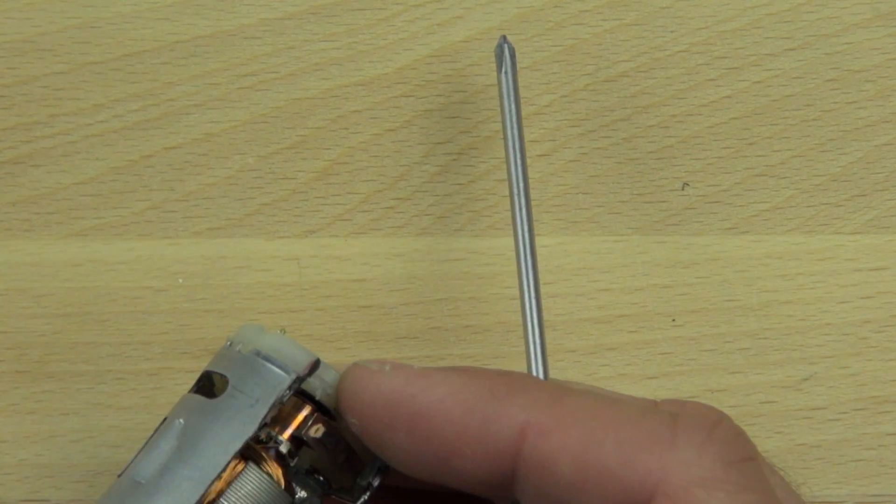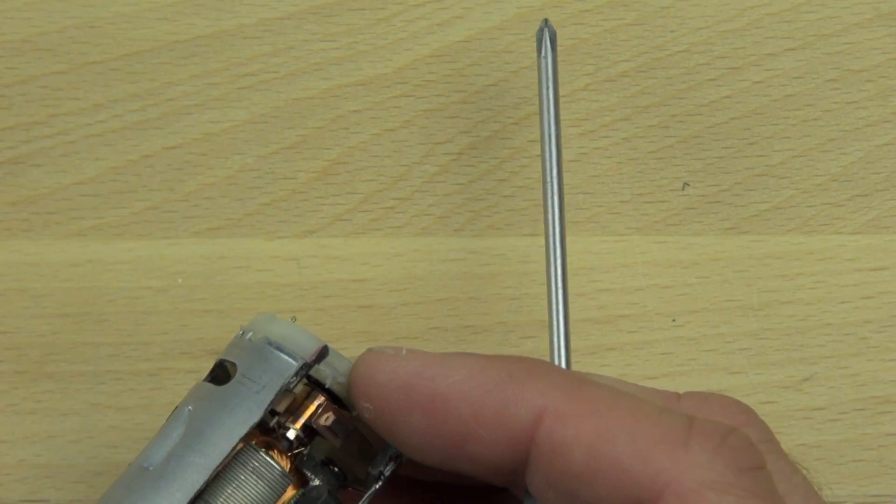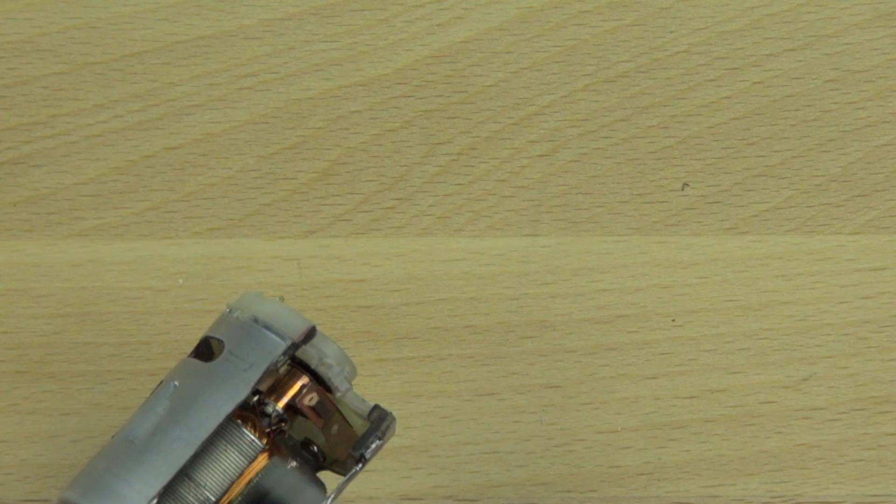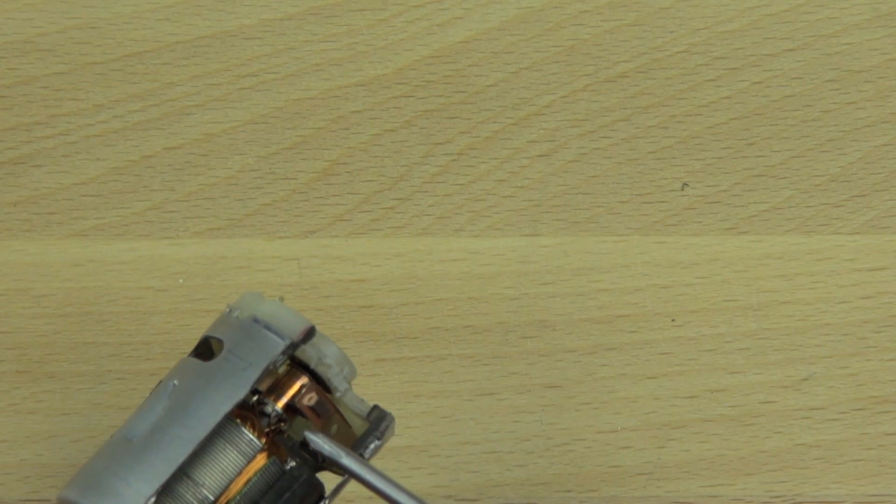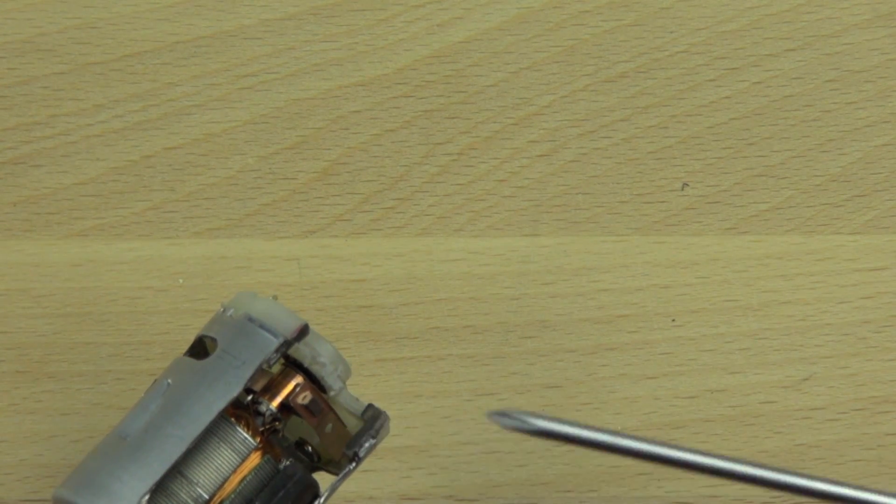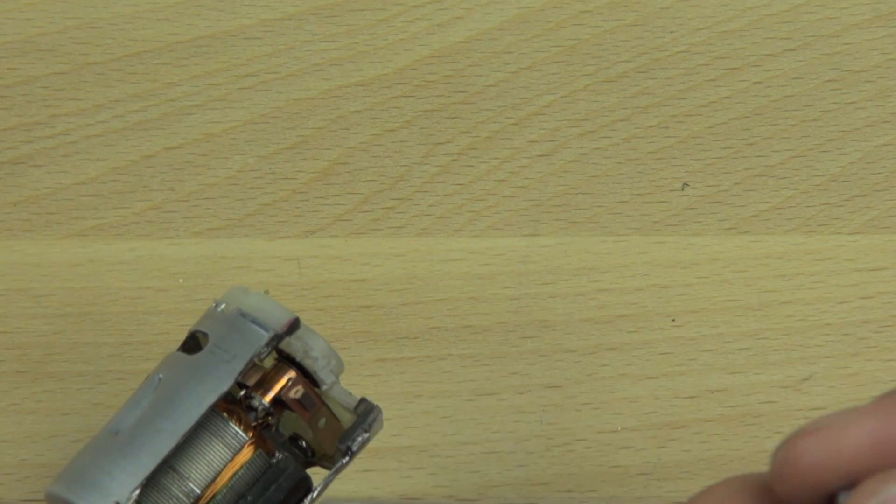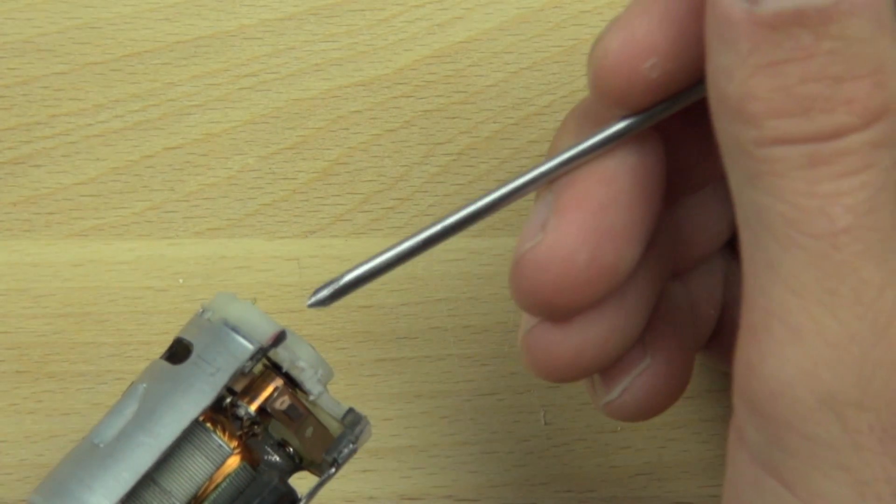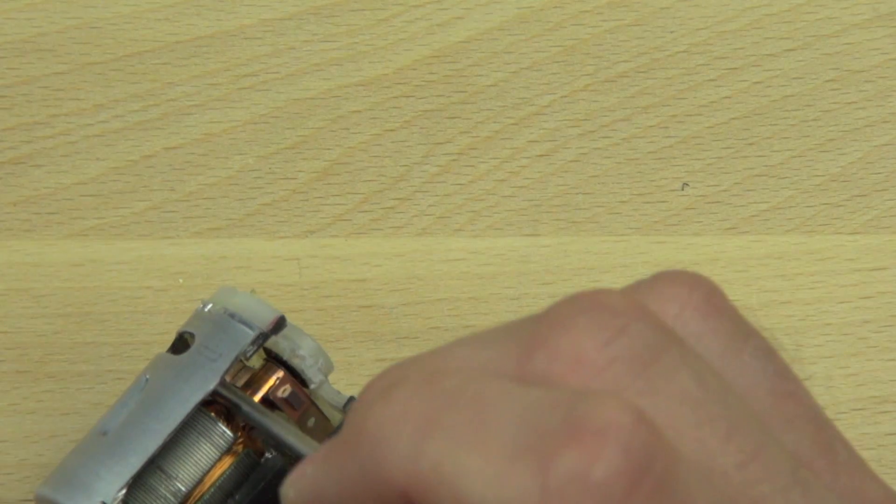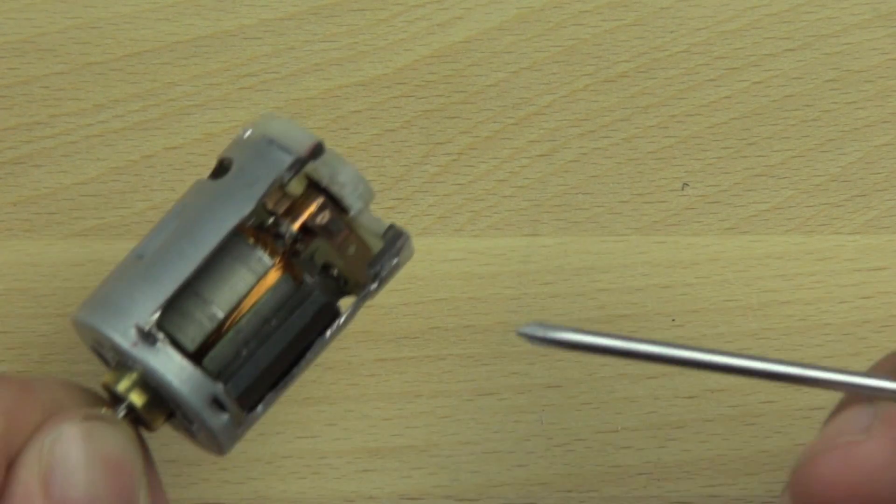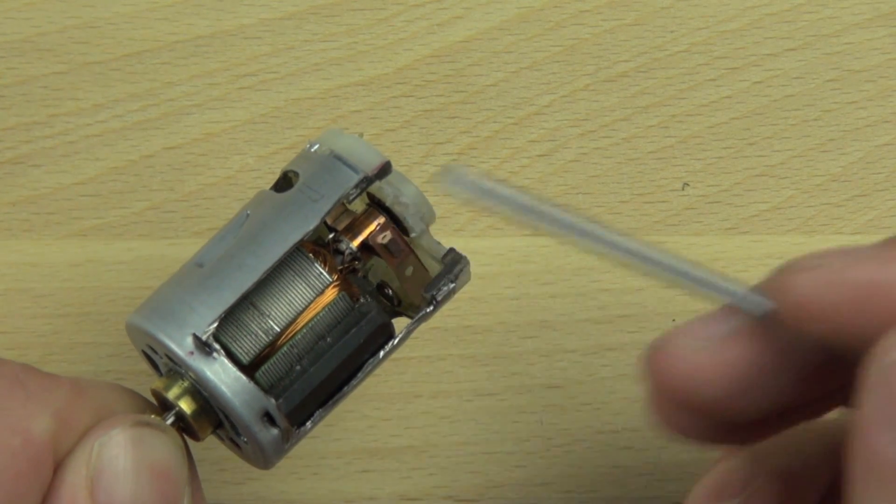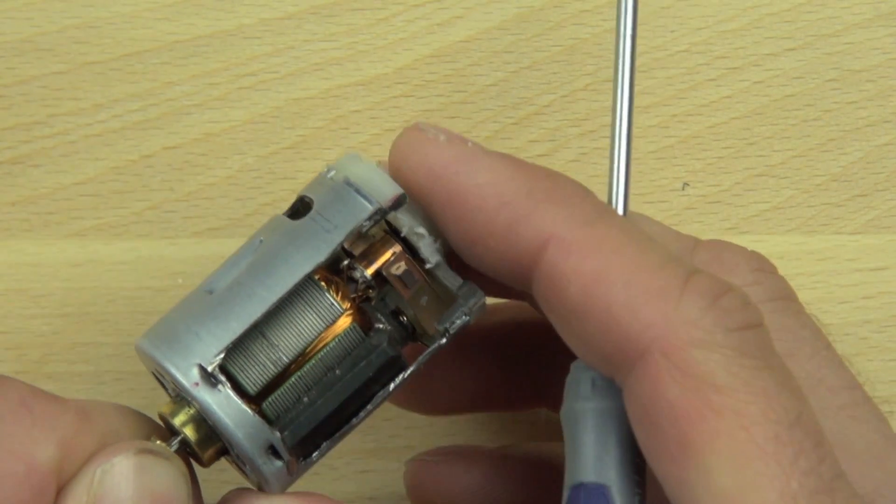And it's segmented because as the power flows through the commutator, it flows through in one direction, or it flows through the commutator and down to the armature and then back out of the commutator on the other side through the other brush. And when it's flowing out, the direction of the field flips. So it's important that that commutator has different sections for that reason.